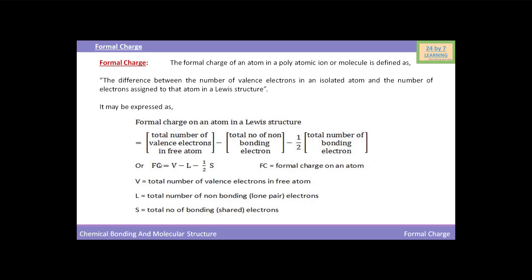This formula can also be written as: Formal charge equals V minus L minus 1/2 S. Here, FC is the formal charge of an atom, V is the total number of valency electrons in free atom, and L